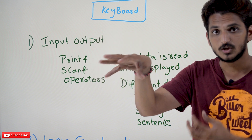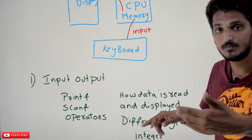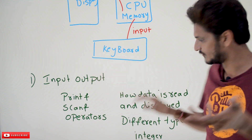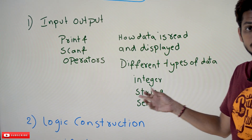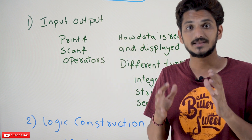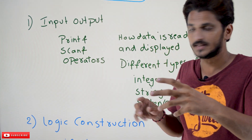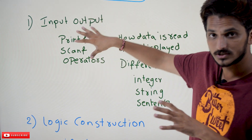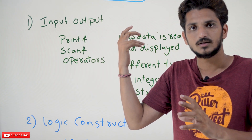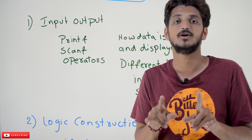Get a graphical visualization of how different types of data are read and displayed. There can be integers, strings, sentences, and paragraphs — understand how a paragraph is read into the program. Have that graphical visualization and start thinking in that direction. It will be very easy for you to study C programming.